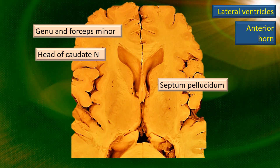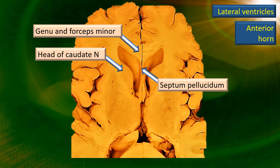The remaining arrow is the caudate nucleus — the head of the caudate nucleus — which forms the third boundary. So septum pellucidum, genu, and the head of the caudate nucleus are the three boundaries of the anterior horn.